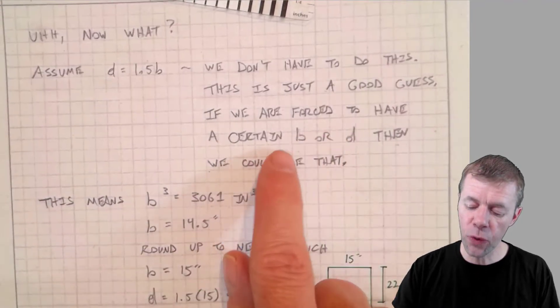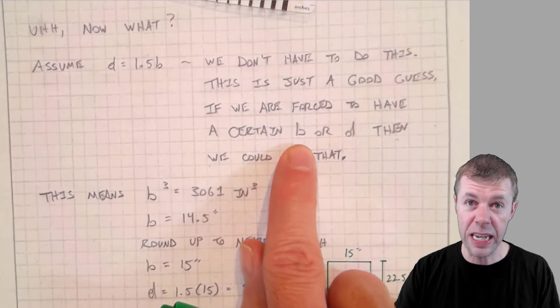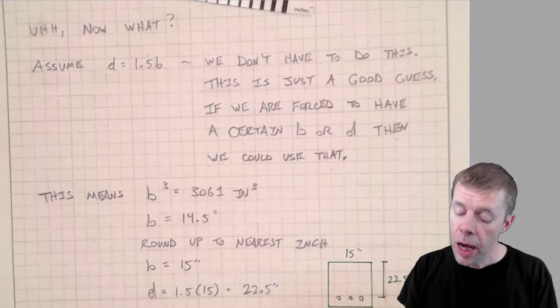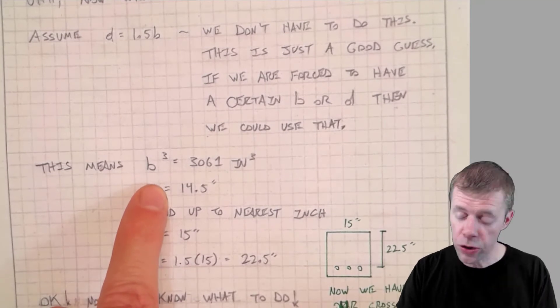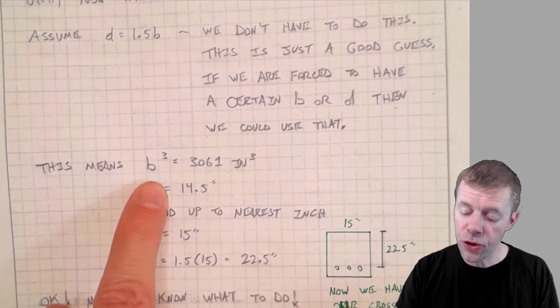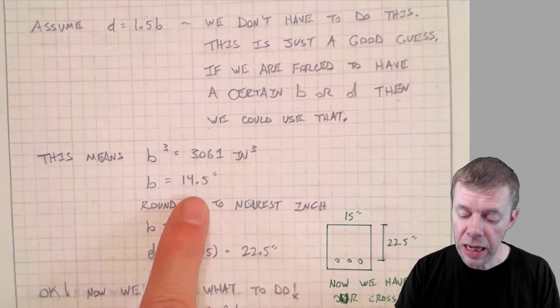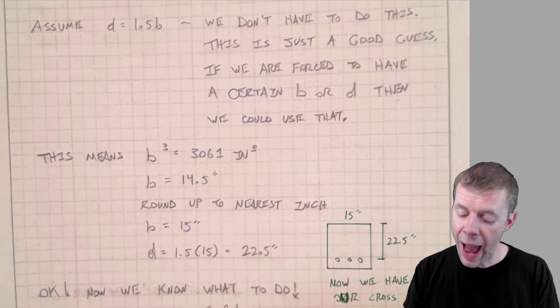If, for some reason, somebody was forcing us to have a certain B or D, then we could just use that. But this means, if I plug into the previous equation I showed you, my B cubed is 3061. This gives me my B. Take the cube root of that. It's 14.5.